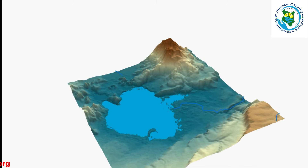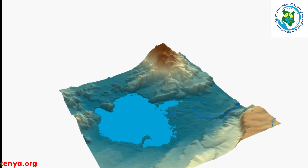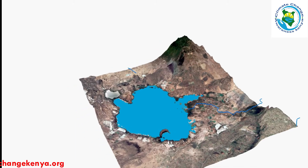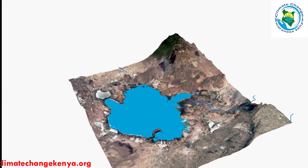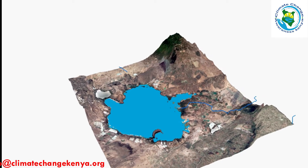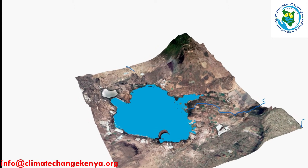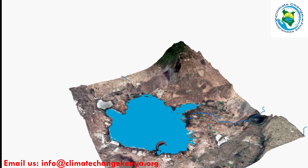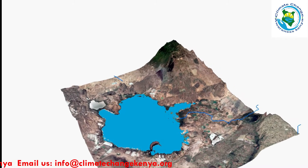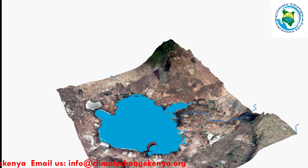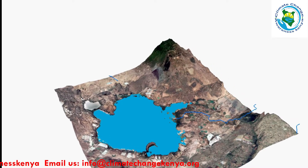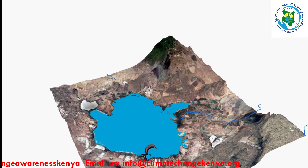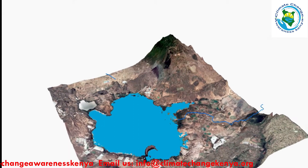The last time the residents of Lake Naivasha experienced such water levels was in 1906, when the water levels were at 1892 meters above sea level. The areas affected by these rising water levels include Kihoto, Mayela, Jambini, and Kijabi.